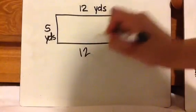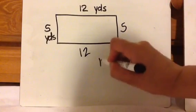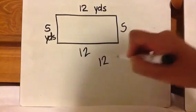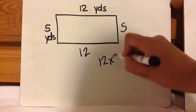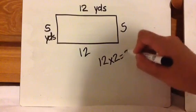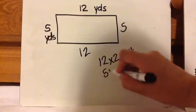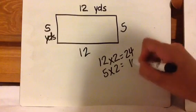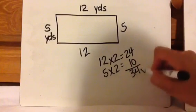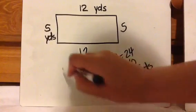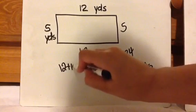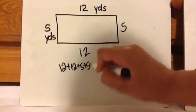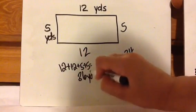Okay, so I have to label 12 and 5. And so you can add all the sides or you can double the length and obviously double the width and then you get 34 yards. Or you can do 12 plus 12 plus 5 plus 5 and get 36 yards.